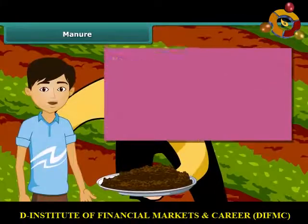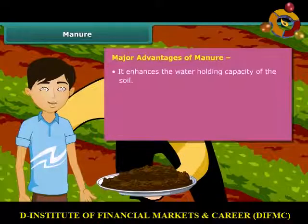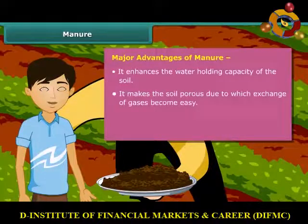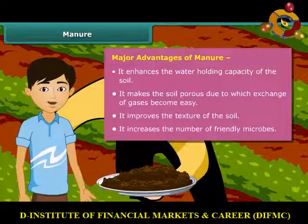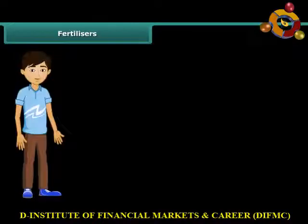Now let us look at some of the major advantages of organic manure. Manure enhances the water holding capacity of the soil. It makes the soil porous, due to which exchange of gases becomes easy. It improves the texture of the soil. It also increases the number of friendly microbes necessary for a healthy crop.